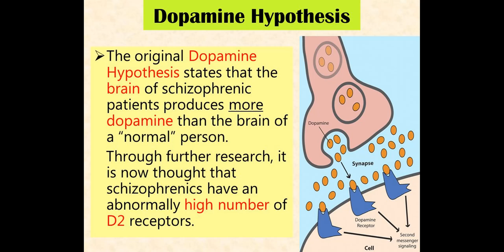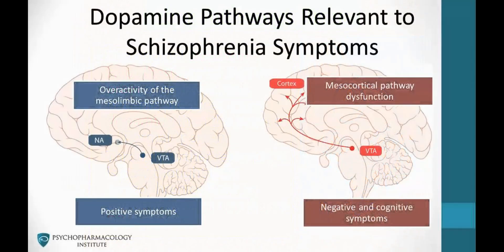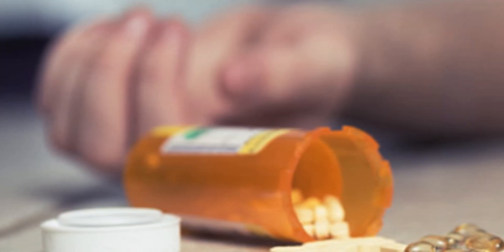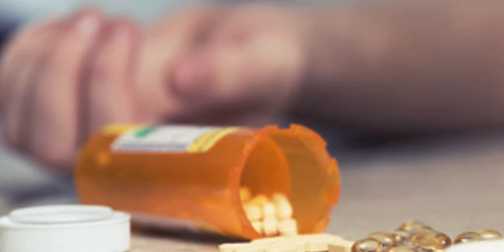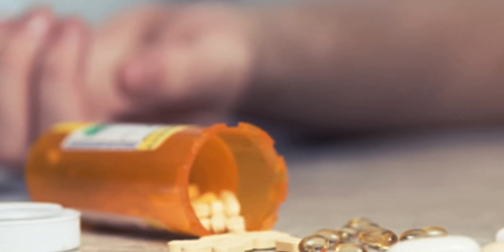The original dopamine hypothesis stated that schizophrenia sufferers have an excessive amount of dopamine, causing neurons that use dopamine to fire too often and transmit too many messages. An excess of dopamine is associated with the positive symptoms of schizophrenia. Evidence for this comes from a group of drugs called amphetamines, which increase the amounts of dopamine — they are known as dopamine agonists.